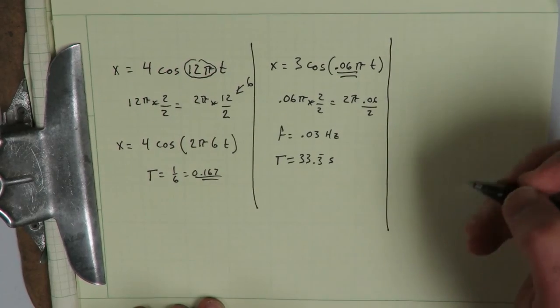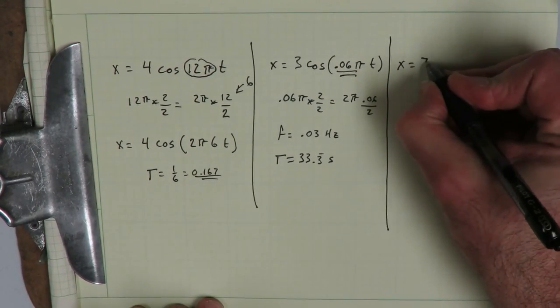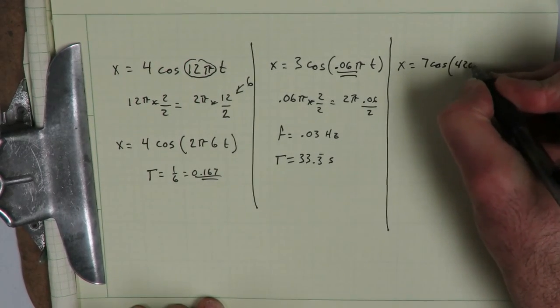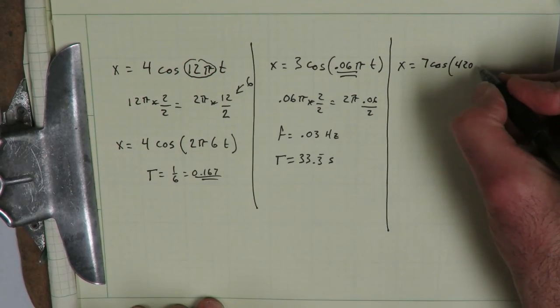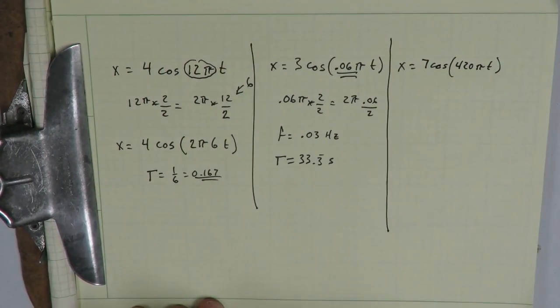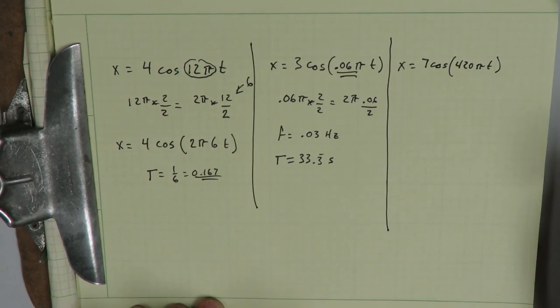Okay, one more. Let's go with x is equal to 7 cosine 420 pi times little t. What does that come out to be when we simplify it into a useful form? Again, pause the video here, work it out, and then come back.